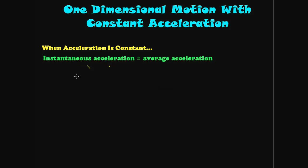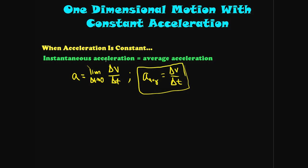For instantaneous acceleration, we have the limit as the change in time approaches zero of the change in velocity over the change in time. For average acceleration, we have just the change in velocity over the change in time. Since these two are equal with constant acceleration, we can drop the limit sign entirely. The acceleration is simply equal to the change in velocity over the change in time.